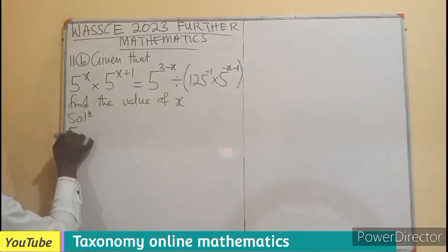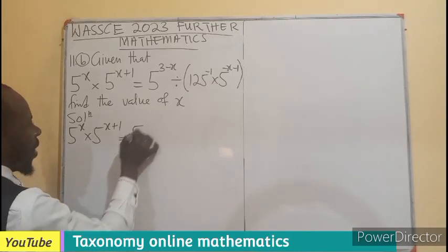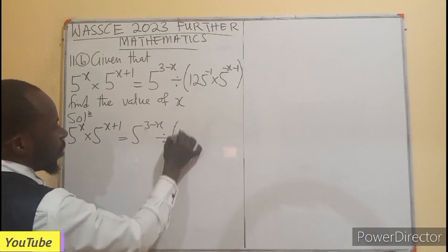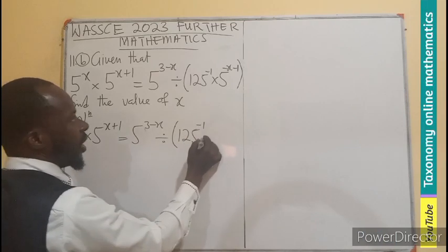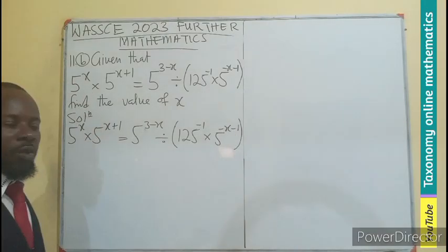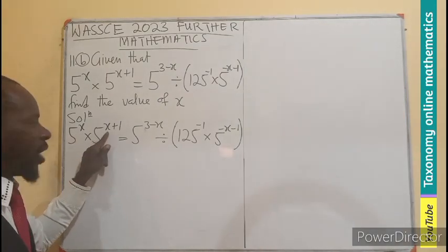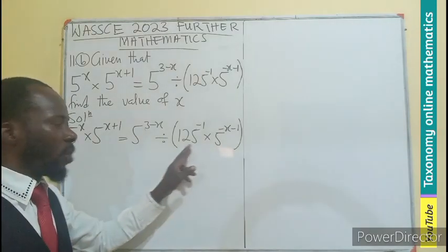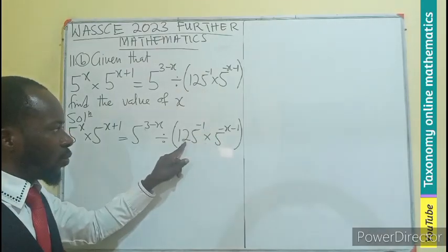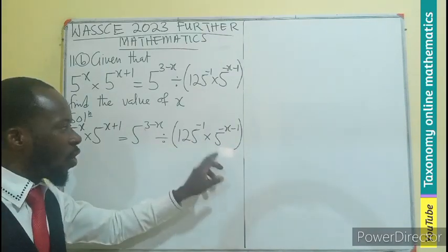So we have 5 exponent x, 5 exponent x plus 1, 5 exponent 3 minus x divided by 125 exponent negative 1, 5 exponent negative x minus 1. I am going to apply the law of multiplication. You add the exponents since the bases are the same. Here also is multiplying. I will perform the same law of multiplication, adding the powers. But 125 is not the same as 5. Meaning we need to break 125 into the base of 5.